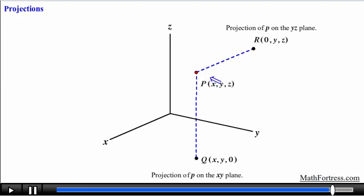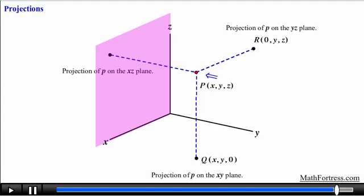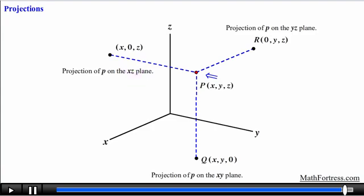Lastly, if I look at point P from the first octant facing towards the x-z plane and shine a light at point P, it will cast a shadow directly across point P. This is the projection of point P on the x-z plane, and has the same x and z coordinates as point P but has a y coordinate of 0. The equation of the x-z plane is y equals 0, so every point on this plane has 0 as its y coordinate. We denote the projection of P on the x-z plane as point S with coordinates (x, 0, z). In a later topic this concept of projection will be useful as we tackle more challenging concepts in multivariable calculus.